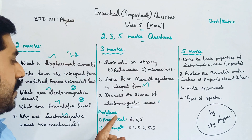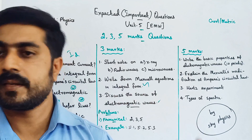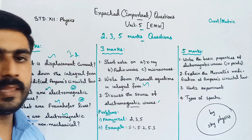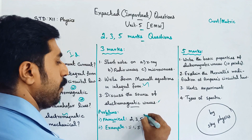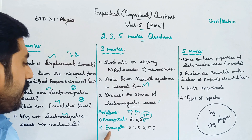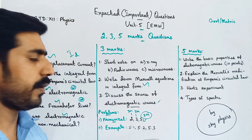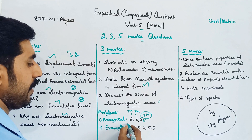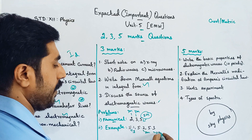Next are numerical problems. There are totally 5 problems. At least problem numbers 2, 3, and 5 are important — problem number 2, problem number 3, problem number 5. Also example problems 5.1, 5.2, and 5.3 are important, with example 5.1 being compulsory. These fall under the 2-mark and 3-mark categories.